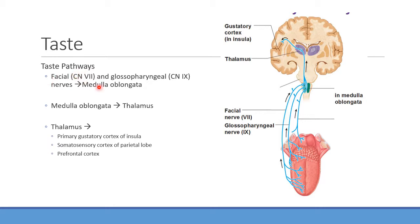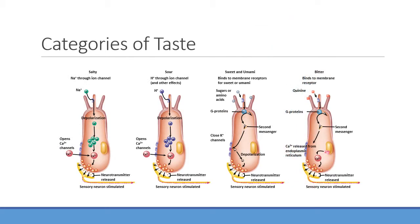Taste signals travel via cranial nerves seven and nine to the medulla, then to the thalamus, then to the primary gustatory cortex of the insula and the somatosensory cortex — which also processes tongue sensation. Since taste and smell project to similar brain areas, they are integrated to give a complete picture of what's on the tongue.